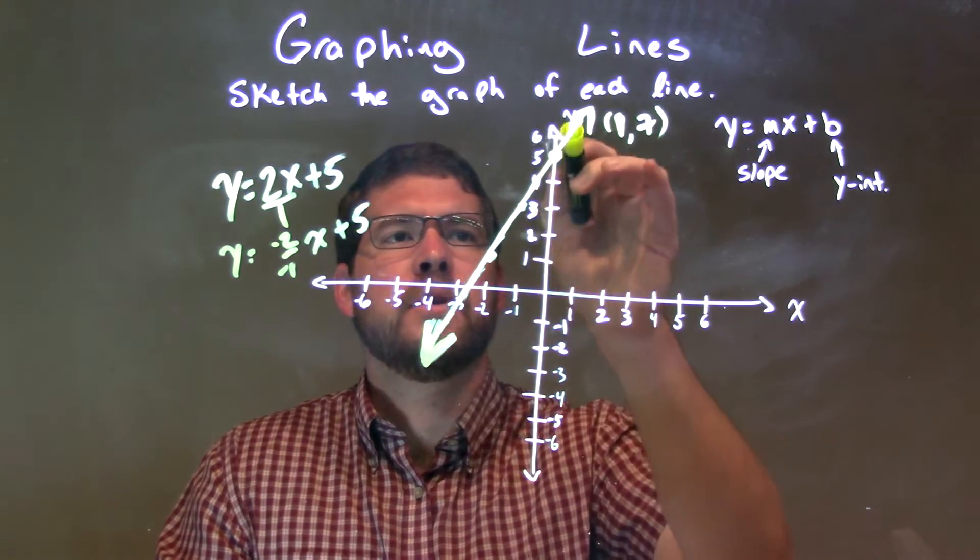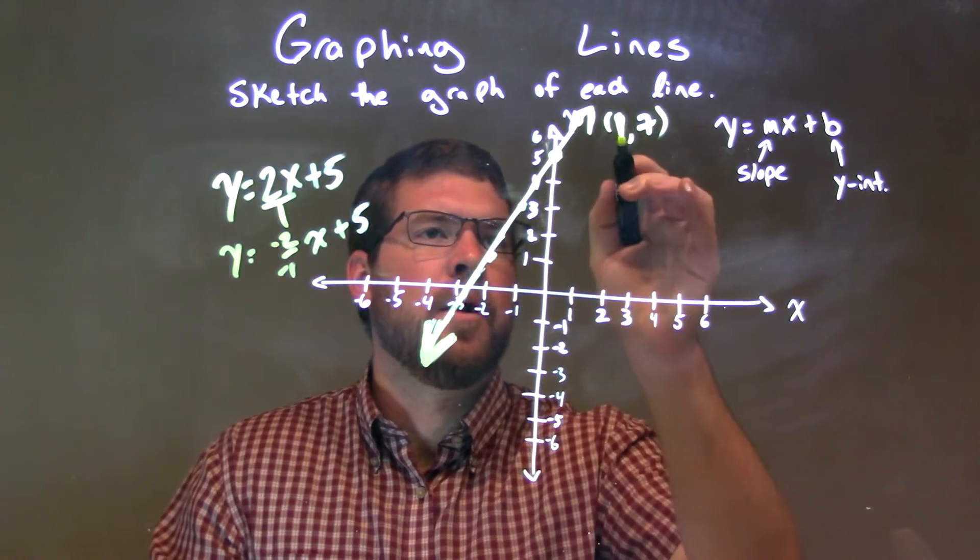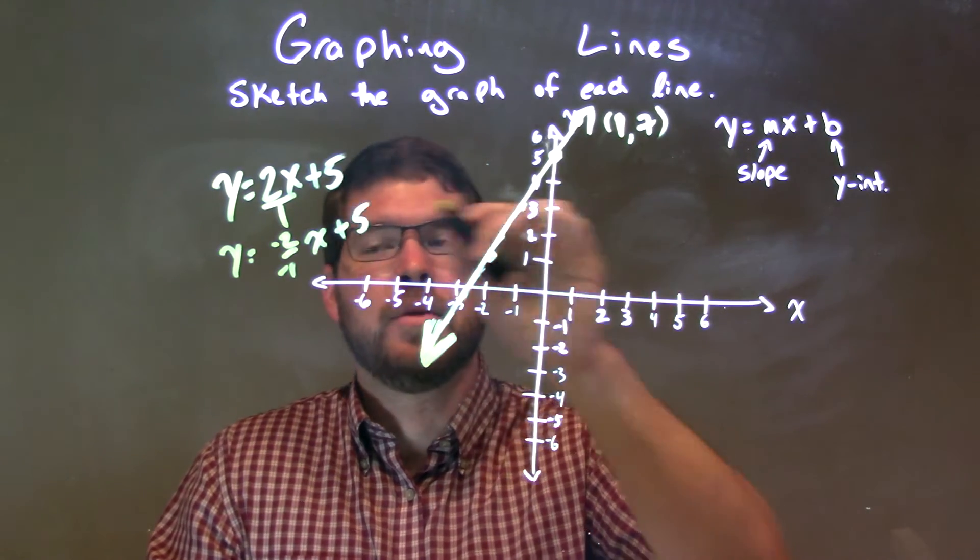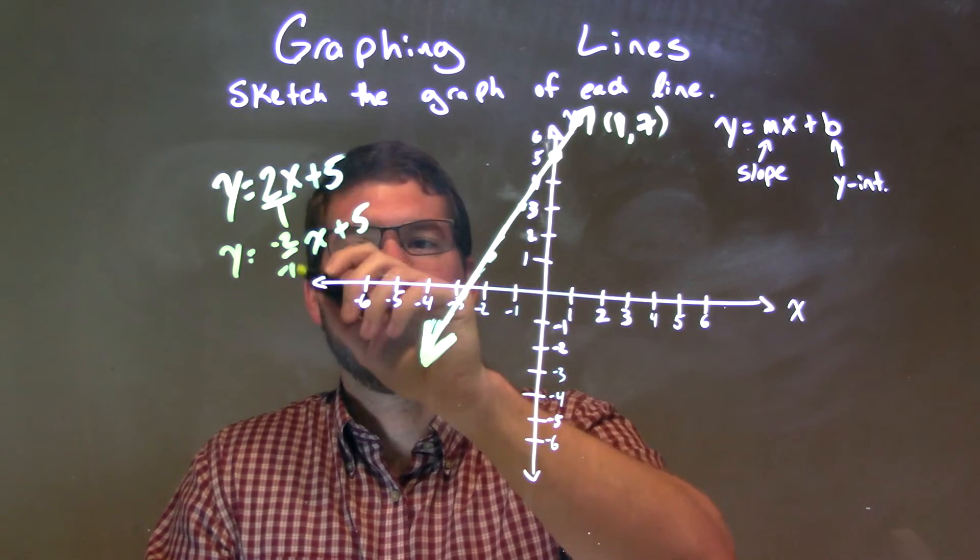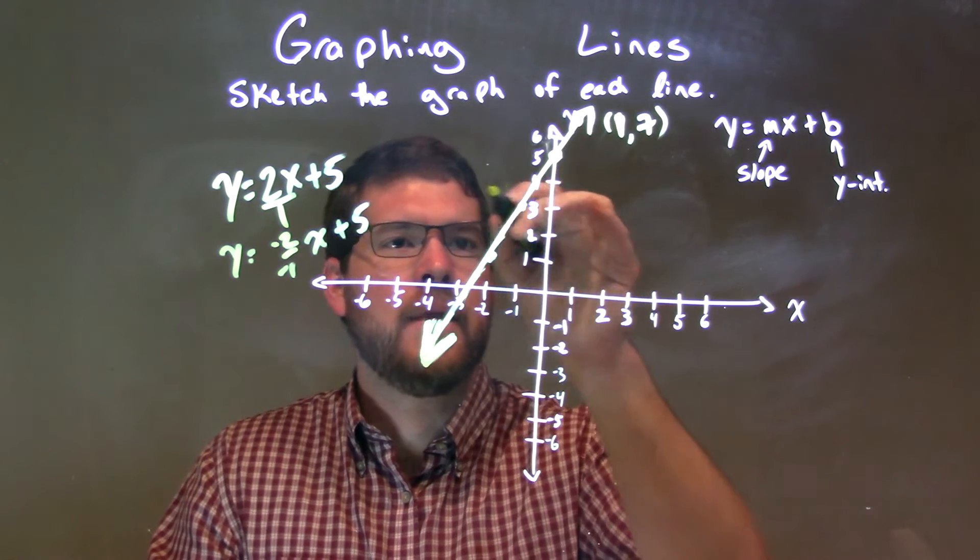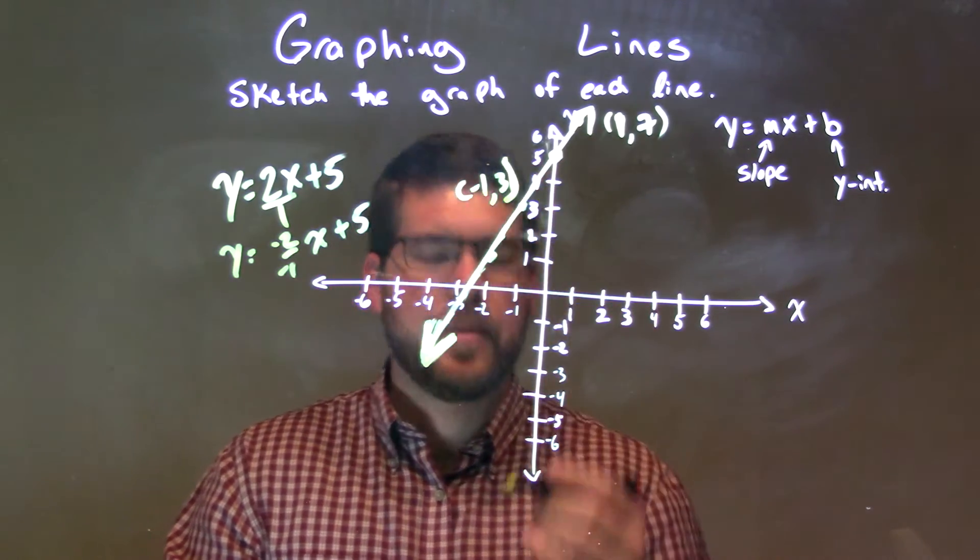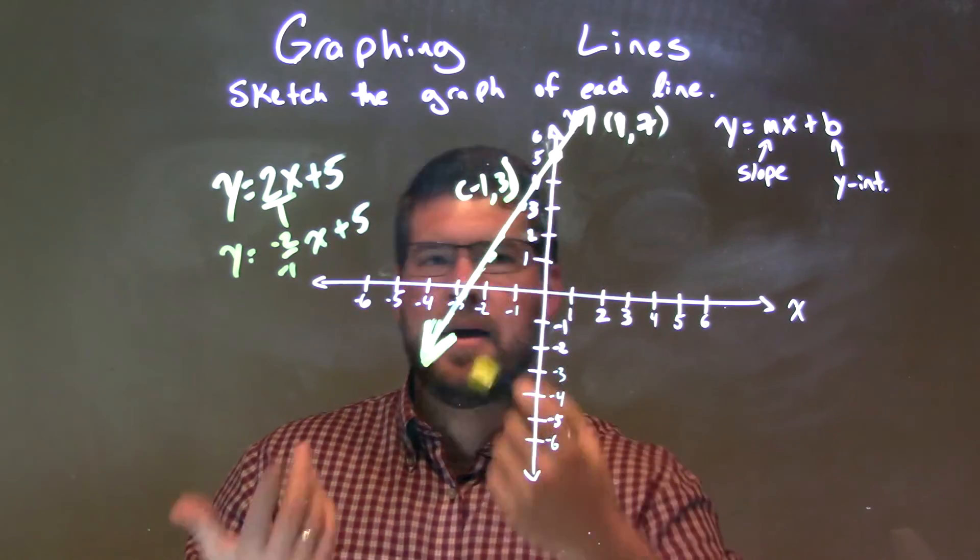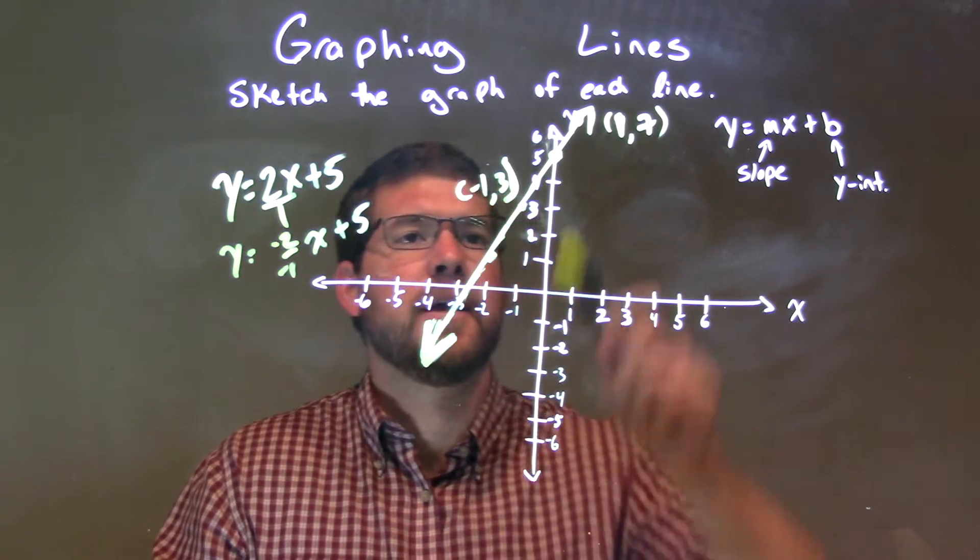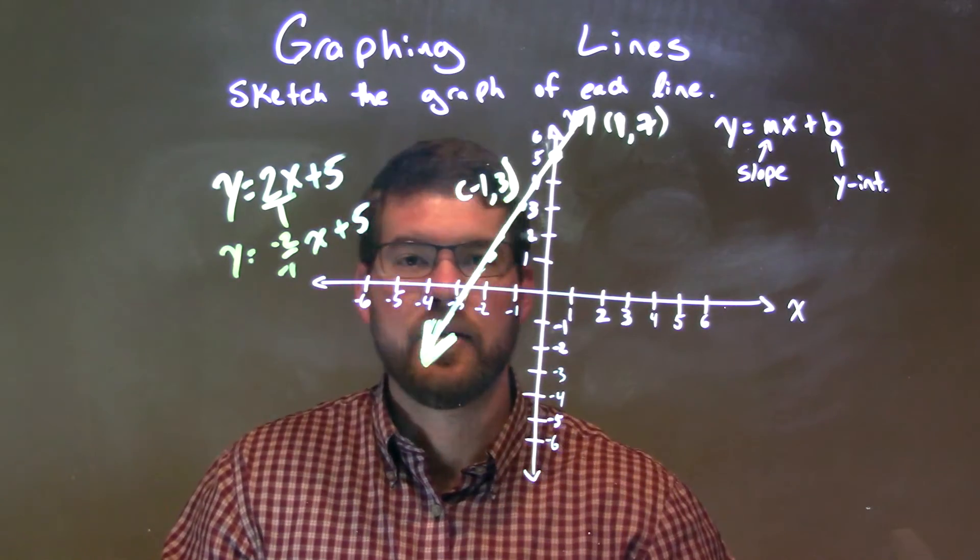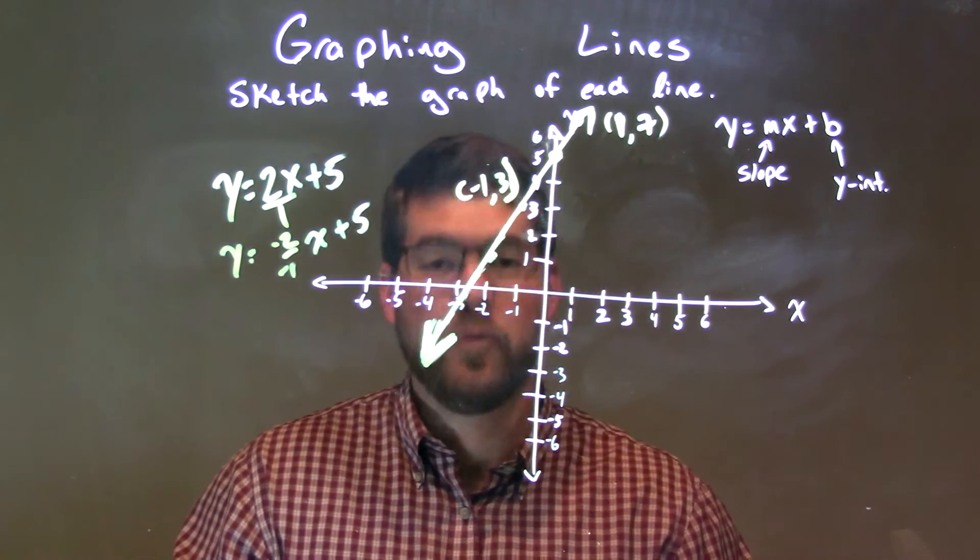We also went up 2 units over 1 unit to get the point 1 comma 5. And we went down 2 units, right? Because we know 2 over 1 is the same thing as negative 2 over negative 1. Down 2 units to the left 1. And that point is negative 1 comma 3. Negative 1 comma 3. Then we're going to keep going down, but same idea. We connected all the dots to make our line. And so this graph again is our final answer.